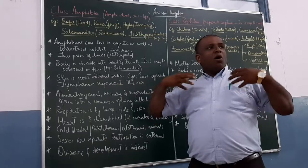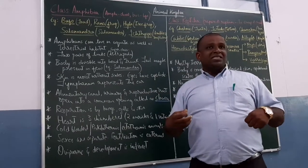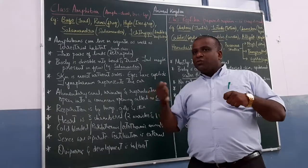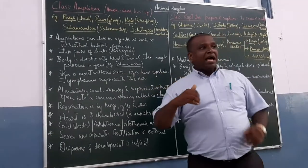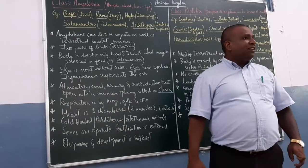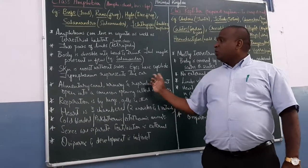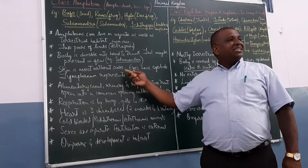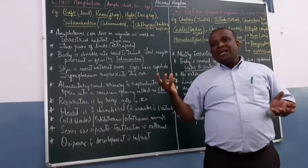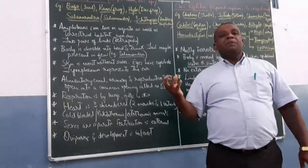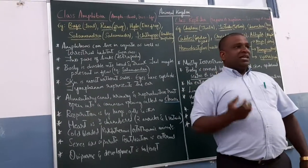Then skin is moist, without scales. Like in reptiles and fishes you might find the scales. But here you don't find any scales. Eyes have eyelids. Tympanum represents the ear. They don't have external pinna. Tympanum is there directly.